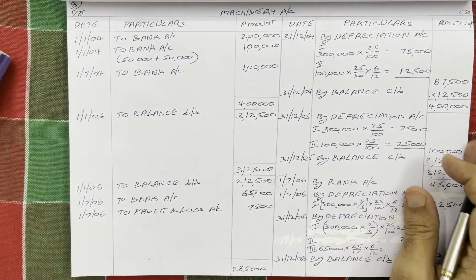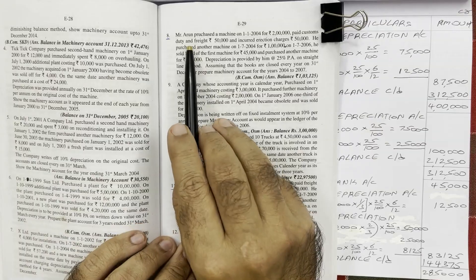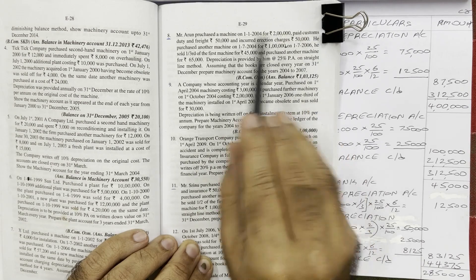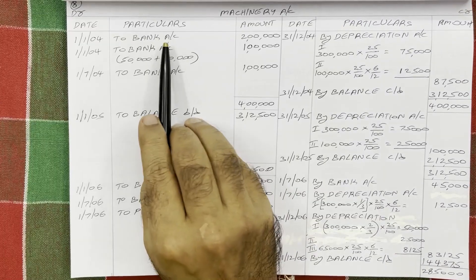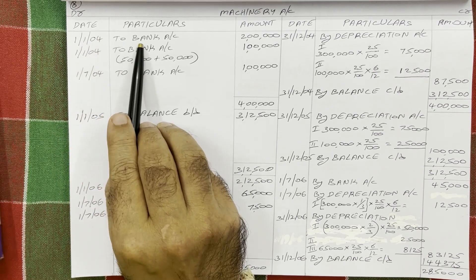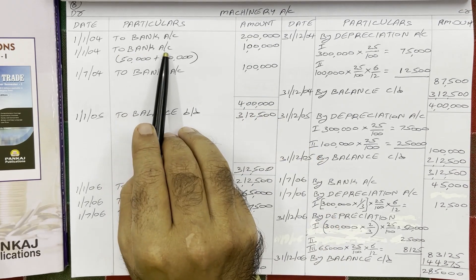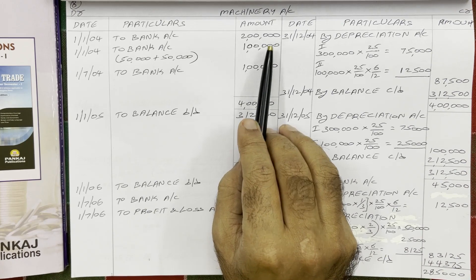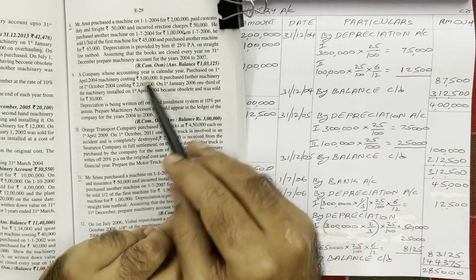See the solution. Machinery account — debit side and credit side. Mr. Arun purchased a machine on 1st January 2004 for 2 lakh rupees, paid customs duty and freight 50,000 and incurred erection charges 50,000. So on the debit side, date is 1st January 2004, to bank account: 2 lakh rupees. For the additional expenditure, to bank account: 50,000 plus 50,000 = 1 lakh rupees. So the first asset's total cost is 2 lakh + 1 lakh = 3 lakh rupees.